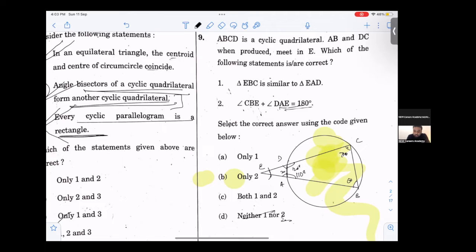If it is 70, then it will be 60. EBC is similar to triangle EAD, which is correct.